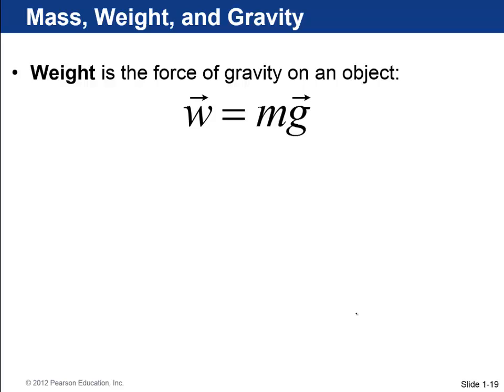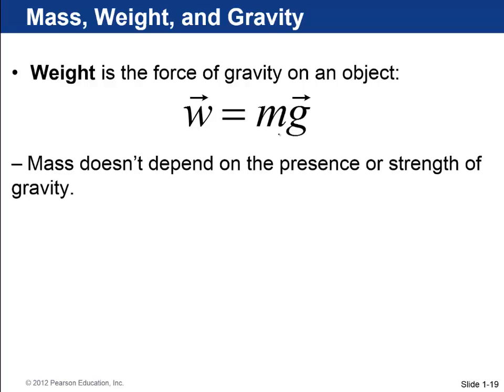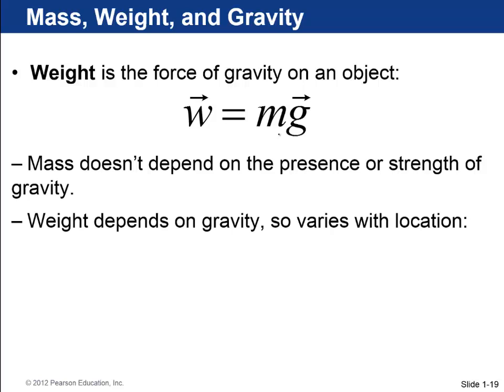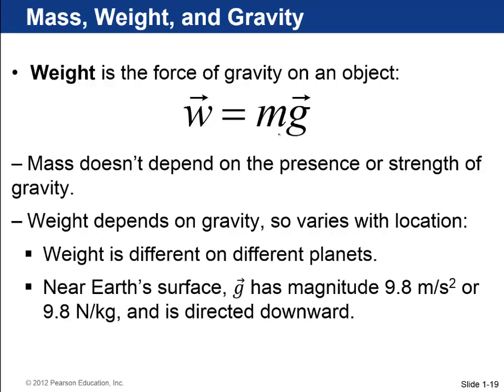Lastly, we're going to talk about weight, mass, and gravity. The definition of weight is it is the force of gravity acting on an object, and it turns out that that's equal to the mass of the object times g. Mass is some property of any object which depends on how much stuff is in it, and it doesn't depend on the presence of gravity or even the strength of gravity. But weight does depend on gravity, and so it varies with location. Different planets would have different values of g. g here on Earth has a magnitude of 9.8 meters per second squared, or equivalently 9.8 newtons per kilogram directed downward.